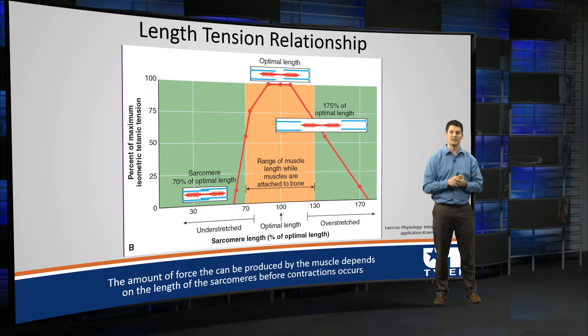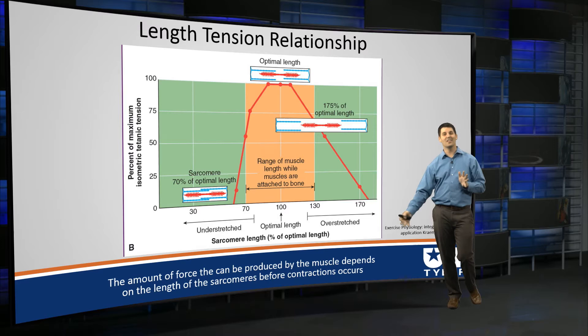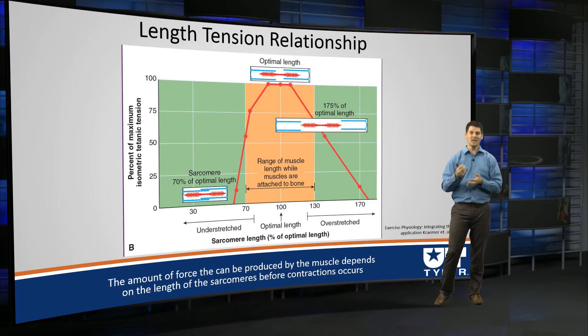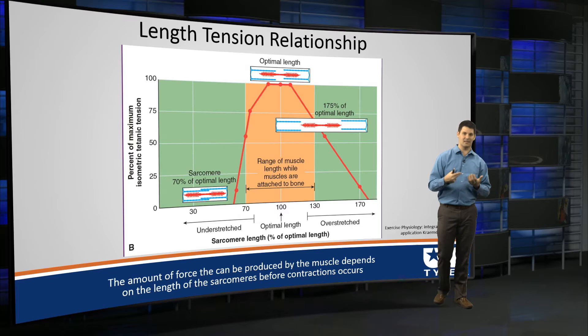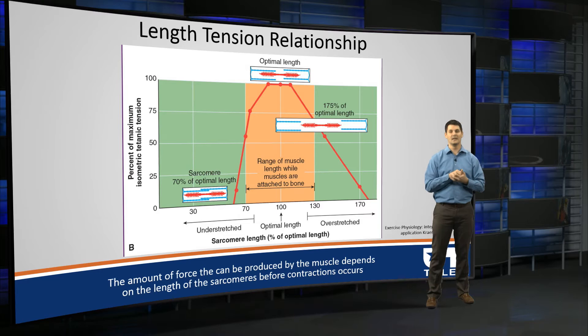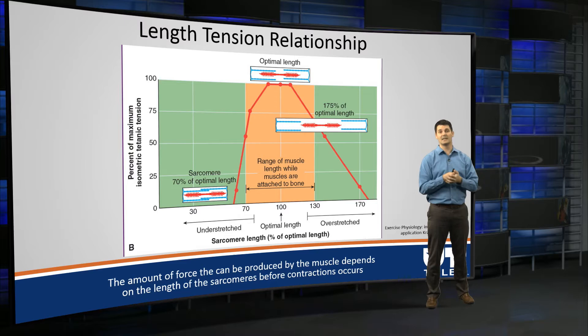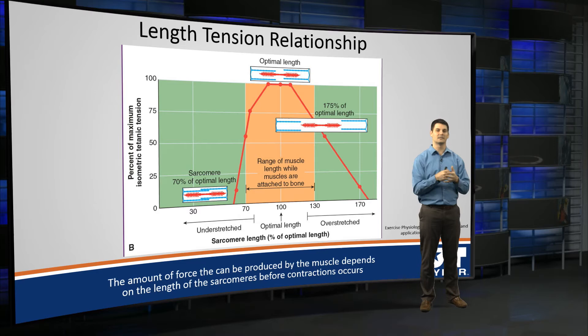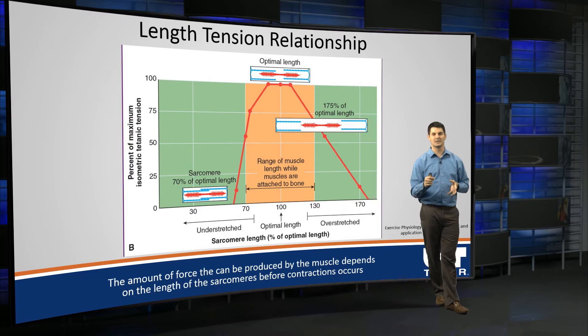If we look past optimal length on the lengthening phase, the exact same thing happens, but instead of the sarcomere being shortened, we're stretching and pulling it apart. At the far end of the spectrum, you can see that the thick filament is no longer able to interact with the thin filaments. If actin and myosin can't interact, how much force can we produce? Little to none. So we need to stay in that optimal length to have actin and myosin able to interact. Luckily, our muscles really stay pretty close to optimal length at all given times.